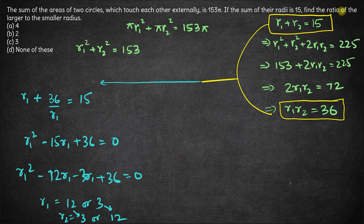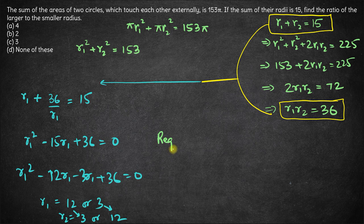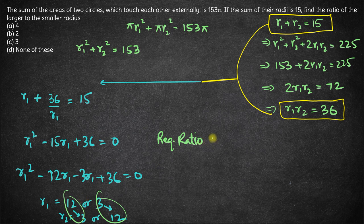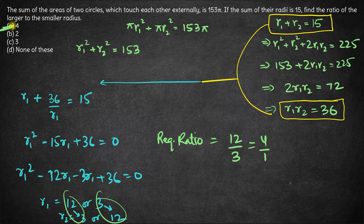In any case, what we need to figure out is the ratio of larger to the smaller radius. So the required ratio, in any case, the larger radius is 12 and the smaller radius is 3. So the required ratio is 4 is to 1, which is option A here. Correct answer is option A.